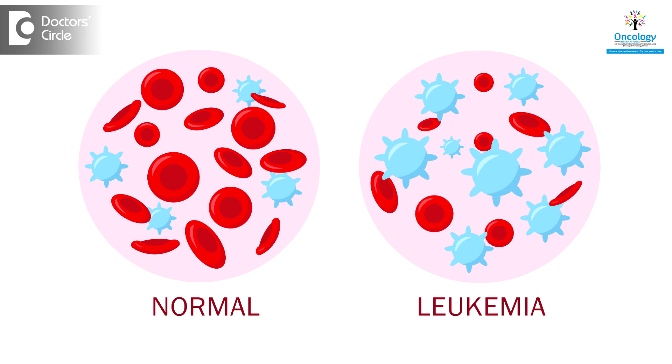Leukemias are the traditional blood cancers — basically the abnormality of the blood components which makes it difficult for the body to function normally. There are four major subclassifications of leukemias. You have the acute leukemias, subdivided into acute myeloid leukemia and acute lymphoblastic leukemia. Then you have the chronic leukemias, which can be divided into chronic myeloid leukemia and chronic lymphocytic leukemia. The chronic leukemias are highly controllable. An example is chronic myeloid leukemia or CML, in which patients with adequate therapy can be treated for a long duration and can live a good quality of life.